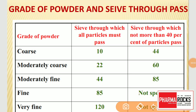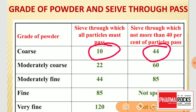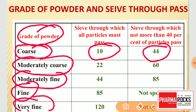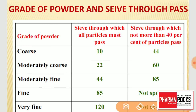Hello friends, welcome to PharmaRocks. In this lecture we will study about the grade of the powder and a sieve. This chapter on size separation — this table is very important for the competitive exams. We will study about the grade of the powder and its number. There are total five types of powder grades: coarse powder, moderately coarse, moderately fine, fine, and very fine.